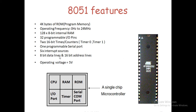The 8051 has 8-bit data lines, which is why we call it an 8-bit microcontroller, and 16-bit address lines. If you want to interface external memory, you can access memory from address 0 to 2^16, which is 65535 — so 0 to 65535 address locations are accessible from this 8051 microcontroller.